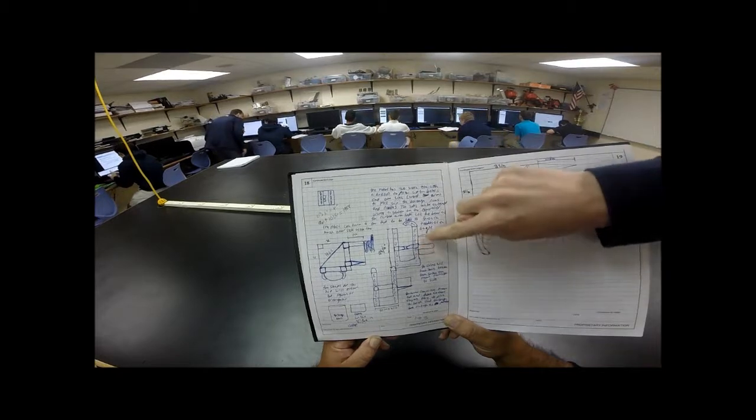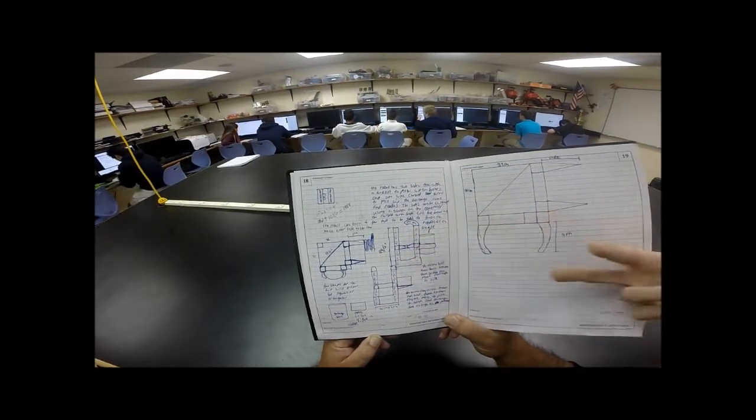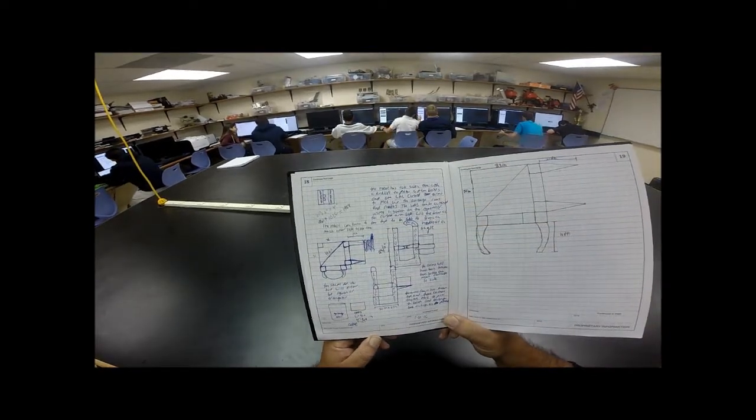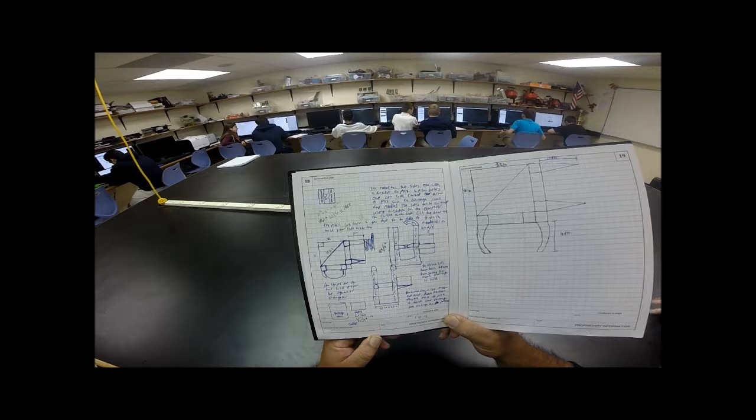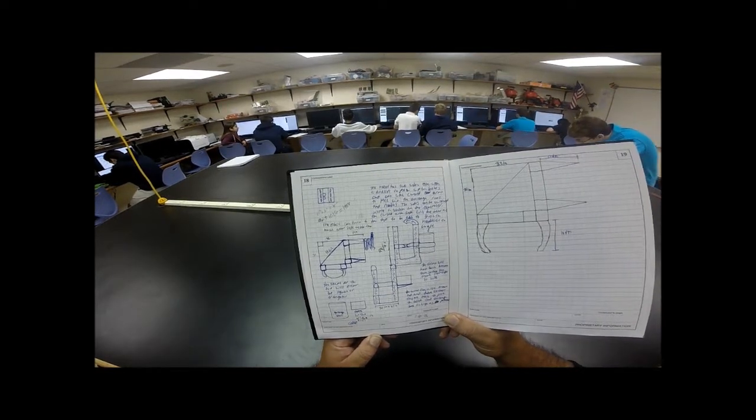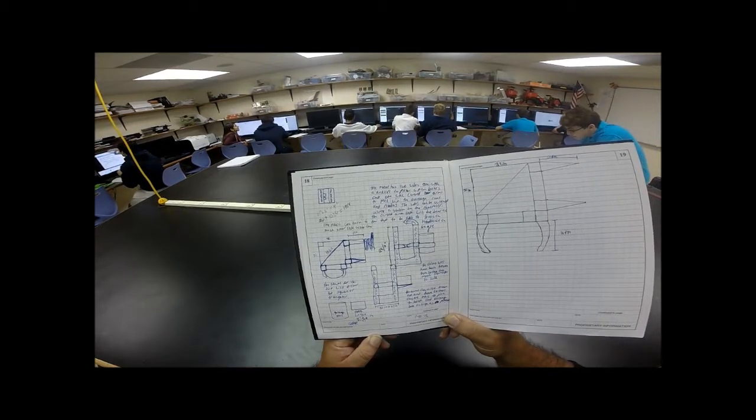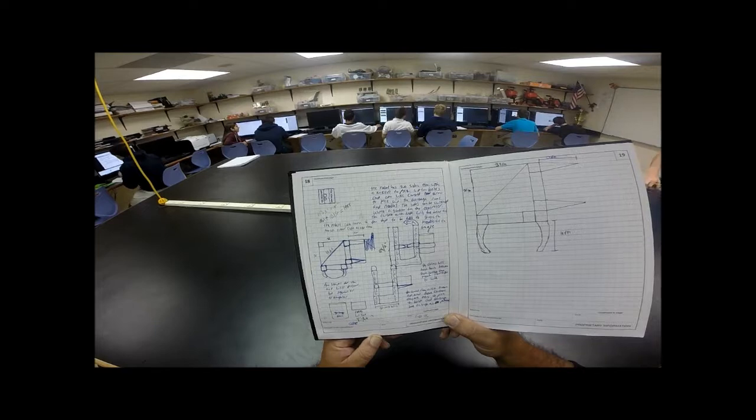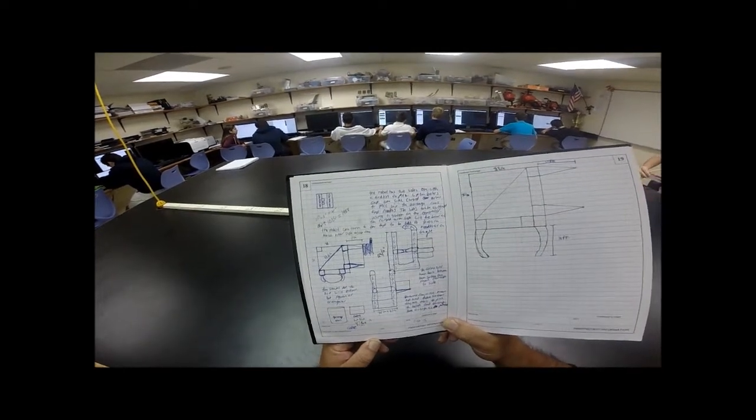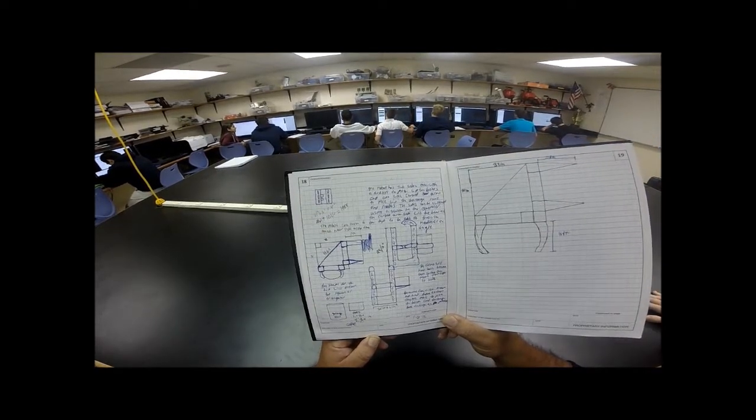It's designed so that if you press a button it will turn to pick up whatever is necessary. If you need to pick up a tote you switch it to the side with the forklift, and if you need to pick up a garbage can you switch it to the side with the arms. It switches by rotating the bottom part. It'll be on a platform and it'll attach and then it'll be able to turn.